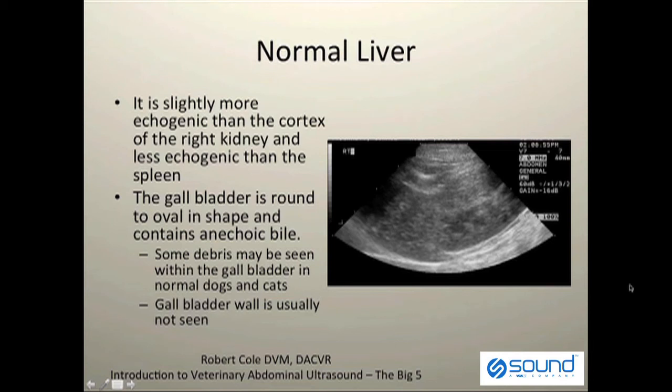The gallbladder is round or oval in shape and should contain anechoic bile. There will be varying amounts of echogenic sludge within the gallbladder.